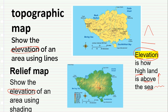The topographic map uses lines called contour lines. We made this in class. Where the lines are close together, it shows us that it is getting steeper — it is going very high very fast.